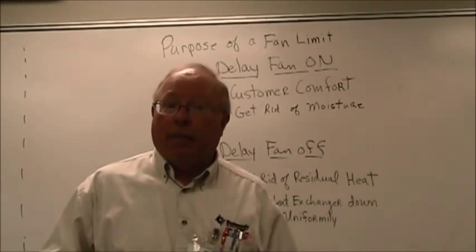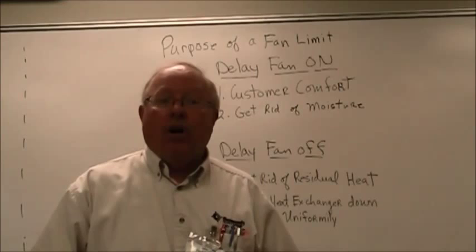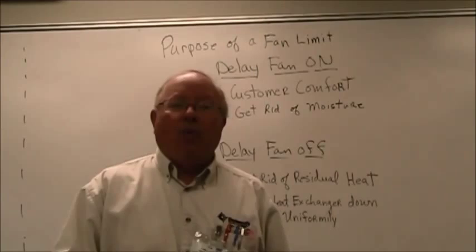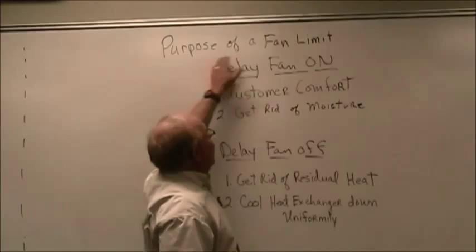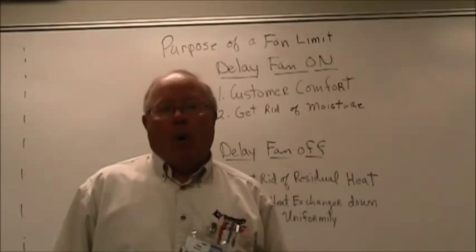Now you have to circulate air around the house in order to warm the house up. But we want to do it in a way in which the customer is going to be comfortable and in a way which is going to be efficient, in order to get rid of all the heat out of the furnace and to transfer it properly and with a lot of efficiency. So why do we delay the fan on? Why do we delay it off? The purpose of a fan limit control is to delay the fan on and delay the fan off in the heating cycle. That's its job.